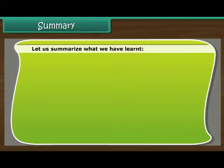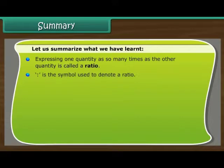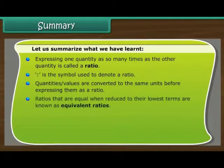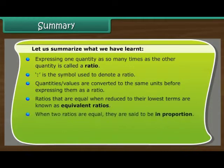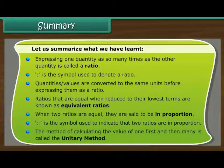Summary: Expressing one quantity as so many times as the other quantity is called a ratio. Colon is the symbol used to denote a ratio. Quantities and values are converted to the same units before expressing them as a ratio. Ratios that are equal when reduced to their lowest terms are known as equivalent ratios. When two ratios are equal, they are said to be in proportion. The method of calculating the value of 1 first and then many is called the unitary method.